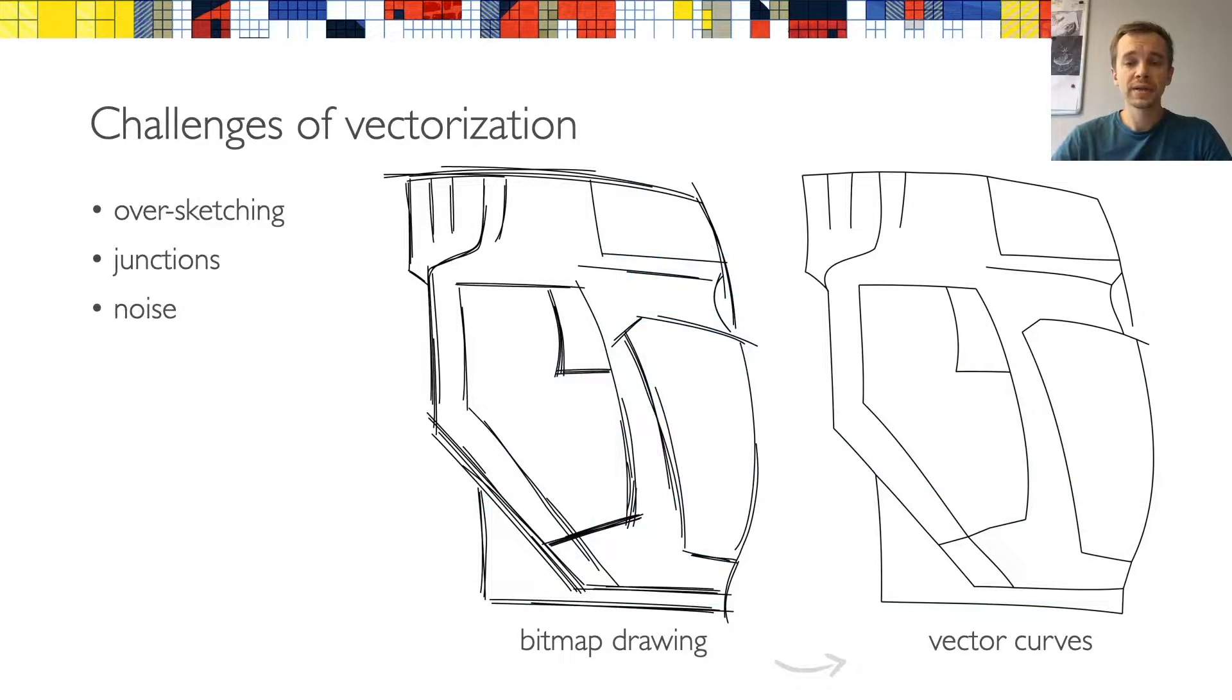Especially for rough input drawings, such as this one here, vectorization is a challenging problem. Arguably the biggest challenge is the proper reconstruction of junctions, which might be very fuzzy in the presence of over-sketching.